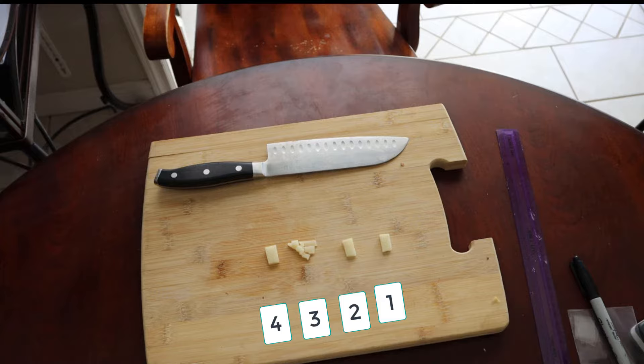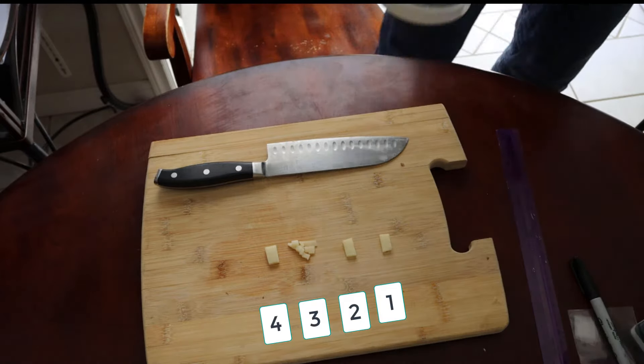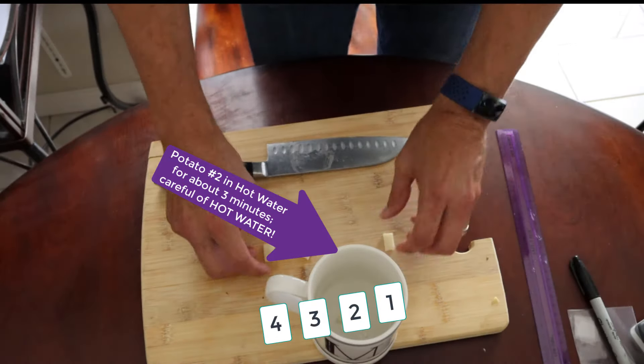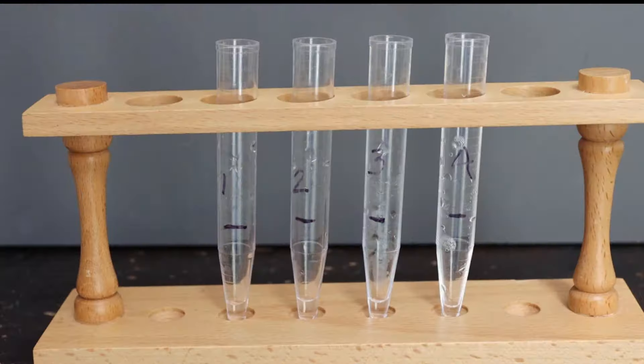So one centimeter by two centimeters by half a centimeter. And then potato two we're going to put in boiling water for a few minutes.